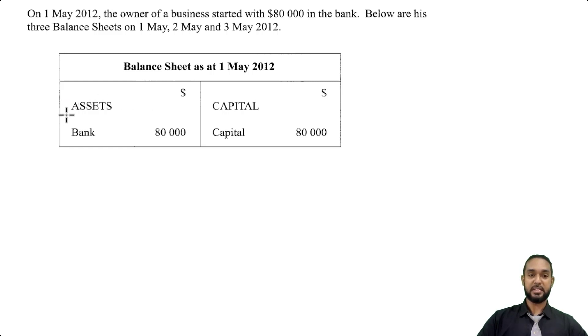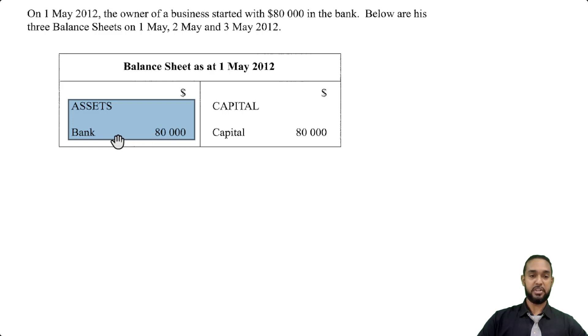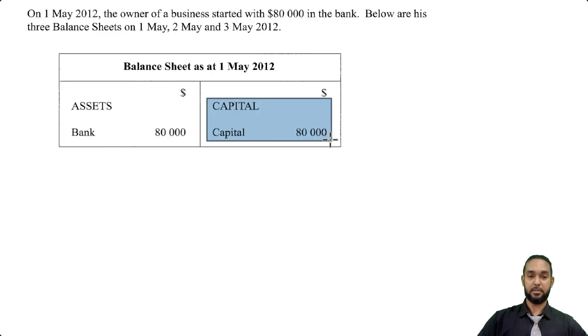What it's showing is that we have assets of $80,000 just in the bank, and that came from the capital. The owner invested $80,000 in capital, and that went to the bank.